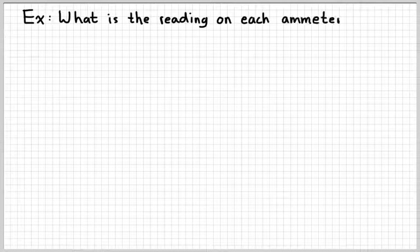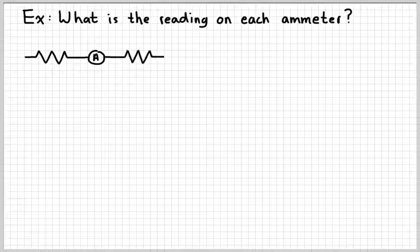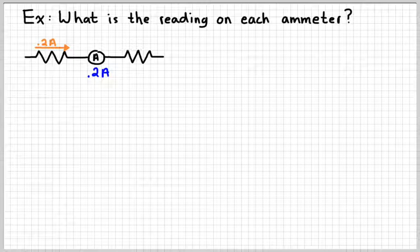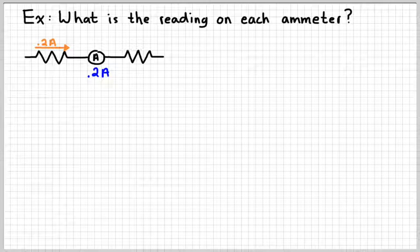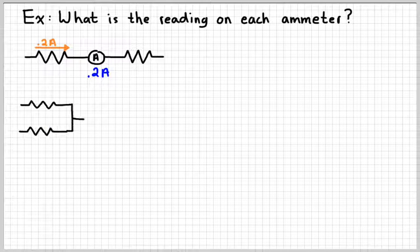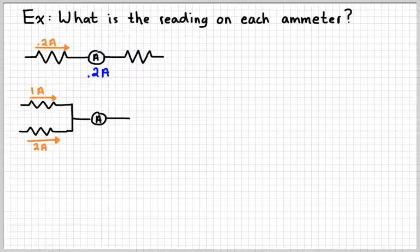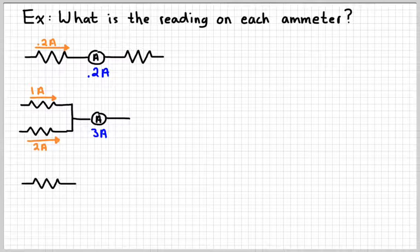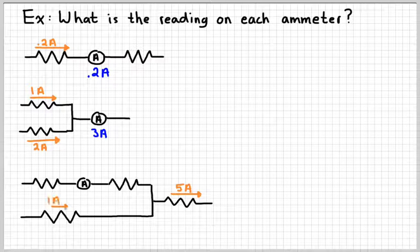Let's do a couple of simple examples. The question here is: for each of these circuits, what is the reading on each ammeter? Consider a simple circuit — 0.2 amperes going through the resistor on the left means the ammeter has to read 0.2 amperes. The fact that there's another resistor to the right doesn't affect that reading. In another circuit, one ampere of current plus two amperes of current would give three amperes of current.